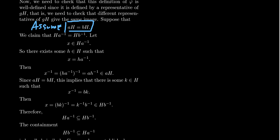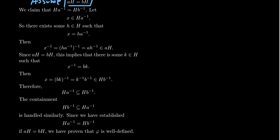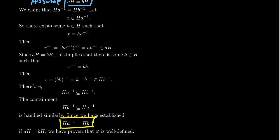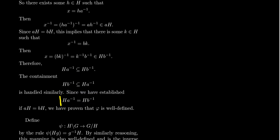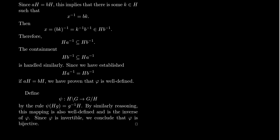This shows that HA⁻¹ is a subset of HB⁻¹. For an infinite situation we want the full equality. There was nothing particularly special about A, so switching A's and B's, a similar argument gives that HB⁻¹ is a subset of HA⁻¹. Therefore the two sets are equal, which shows that the map φ is well-defined — it doesn't matter which representative you use. That gives us that we have a well-defined function.